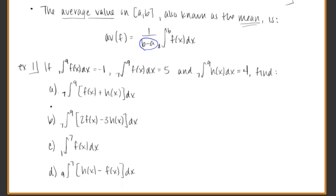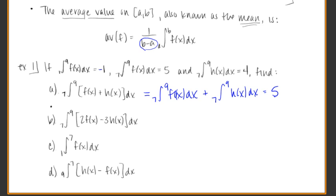In Example 1, we're given that the integral from 1 to 9 of f dx is negative 1, from 7 to 9 of f dx is 5, and from 7 to 9 of h dx is 4. For part A, we can break the integral of f plus h from 7 to 9 into the integral of f dx plus the integral of h dx. That's 5 plus 4, giving an overall answer of 9.